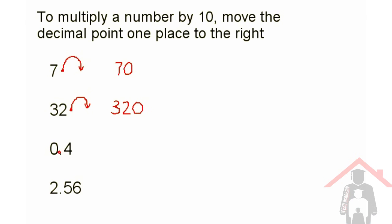For this one, the decimal point is here. We move it one place to the right, and it lands at the end, so we're not going to include it. Now this gives us 0.4, but we don't write the zero — the answer is just 4.